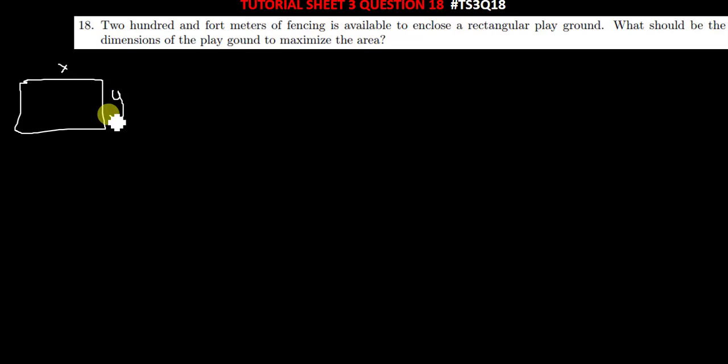After doing that, you can find they are saying 240 meters is available to enclose the rectangle, so the perimeter is 240. The perimeter is just total distance around the shape. If this is x, this is also x. If this is y, that is also y. So we have 2x and 2y. The perimeter will be equal to 2x plus 2y equals 240. When you divide everything by 2, you get x plus y equals 120.